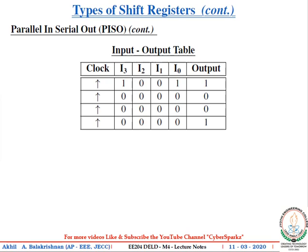The last bit i0 is obtained as the output in the first clock pulse. For the remaining three clock pulses, the input is set to zero — once data is loaded into the flip-flop, for the remaining n-1 clock pulses the input must be zero; otherwise the data will be changed. During the second and third clock pulses, the bits zero are obtained, and during the fourth clock pulse the last bit one is obtained as the output. This completes the working of a PISO shift register.